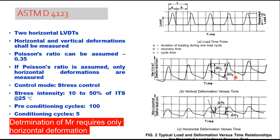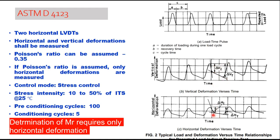There are two types of deformation. One is called delta Vi, the instantaneous vertical deformation, and the other is the total vertical deformation. The same applies to horizontal deformation: once you apply the load, you get the instantaneous horizontal deformation and then the total horizontal deformation.